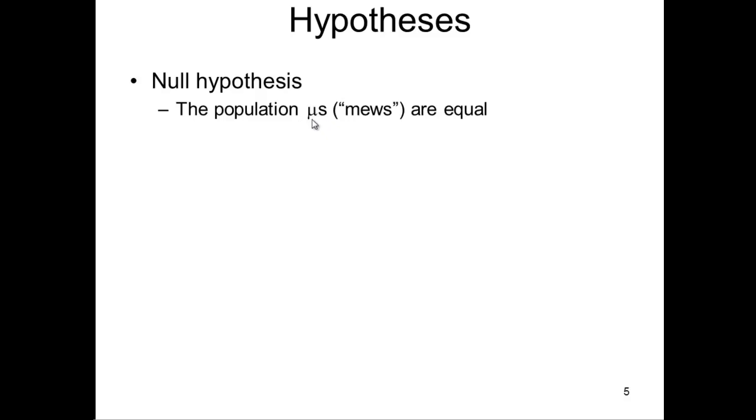So the population mu's are equal. Recall that in statistics, we're inferring results from samples to the population. Ideally we'd have the whole population in the study. It's unrealistic. But we frame our hypotheses in the context of population values. It's really a theoretical notion.